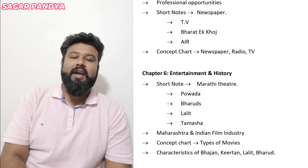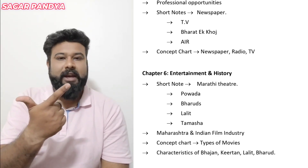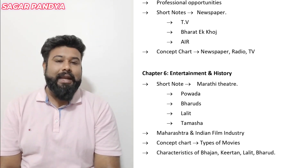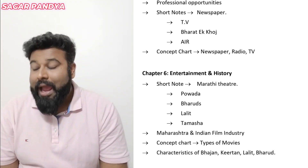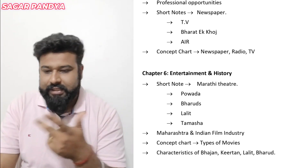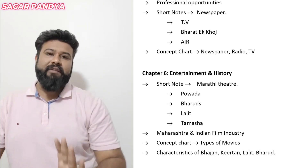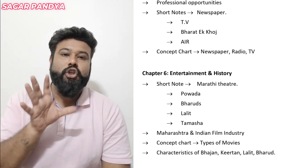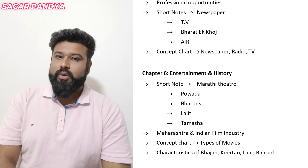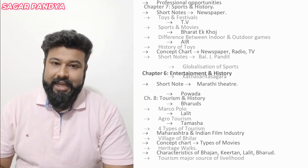The sixth chapter is Entertainment and History. Short notes with respect to Marathi literature, Powadas, Bharoots, and Tamasha will be very important. The answer about Maharashtra and the Indian film industry connection, concept chart on three types of movies, and characteristics of Bhajan, Kirtan, Lalit, and Bharoots become very much important in chapter number 6.